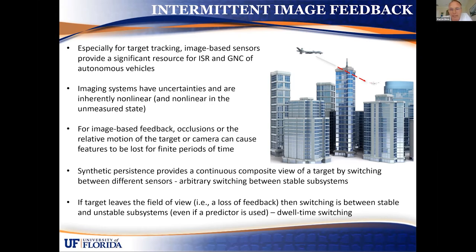Image feedback is an incredible sensor for intelligence, surveillance, and reconnaissance, and guidance, navigation, and control of vehicles. You'll see lots of presentations throughout the day that deal with the inherent nonlinearities of the image space to Euclidean space transformation. But my talk is focused on how we deal with these occlusions or the lack of feedback that can happen intermittently.